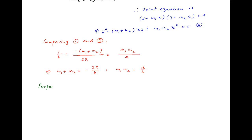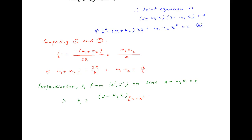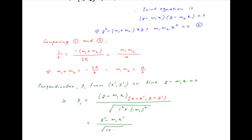Now the length of the perpendicular from the point x dash y dash onto the line y minus m1x is equal to 0 — let's denote it by p1 — is equal to y minus m1x evaluated at x equals x dash and y equals y dash, divided by the square root of the sum of the squares of the coefficients of x and y in the equation y minus m1x is equal to 0. Therefore, p1 is equal to y dash minus m1 times x dash divided by the square root of 1 plus m1 squared.